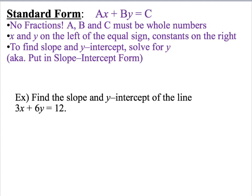If you're ever asked to find the slope and the y intercept of a standard form equation, all you need to do is solve for y. This just means you're putting this equation in slope intercept form. Let's look at this example. Find the slope and y intercept of the line 3x plus 6y equals 12. So if I'm looking for the slope and the y intercept of this line, then I need to solve for y and put my equation in slope intercept form.